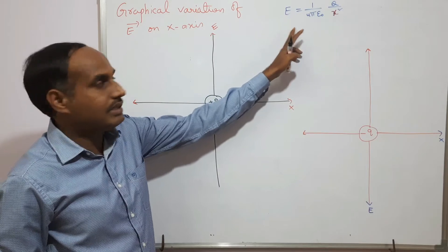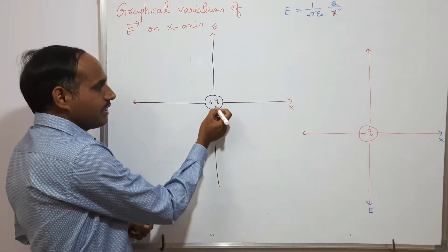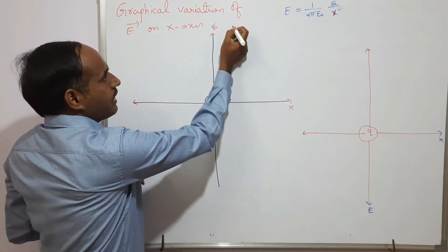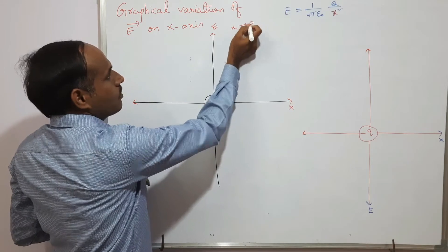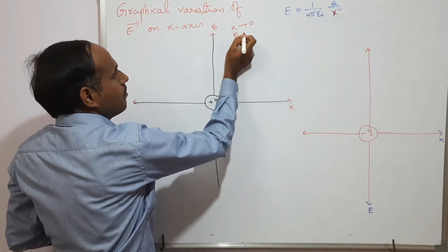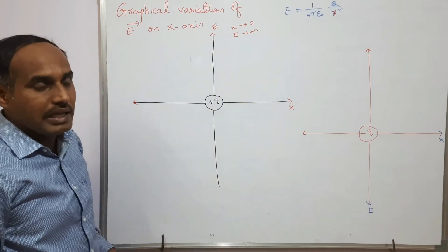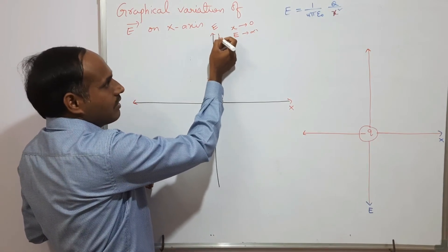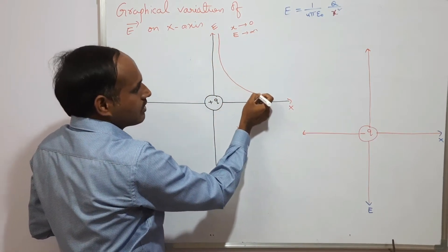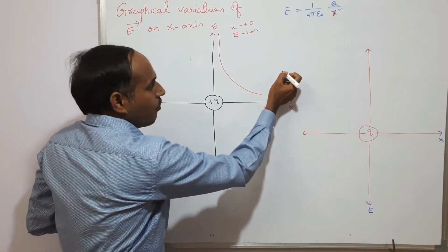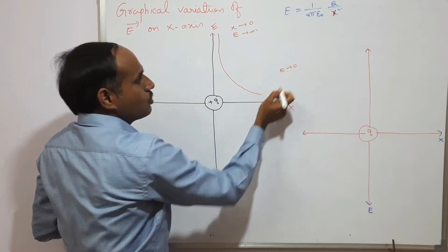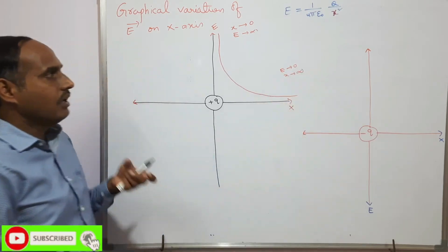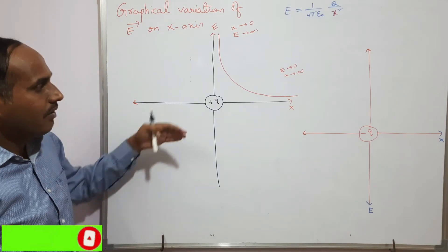For a positive charge: when x tends to 0, E becomes infinite — meaning at the position of the positive charge we have the maximum electric field strength. Then it starts to decrease. As x tends to infinity, E tends to 0. So the curve comes down and approaches the x-axis asymptotically.